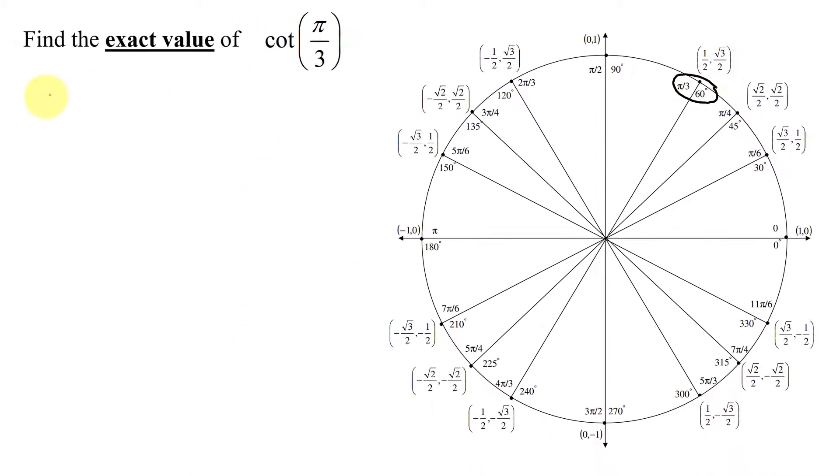So the first thing I'm going to have to do is rewrite the cotangent of pi over 3 in terms of sines and cosines. Using the ratio identities, the cotangent of pi over 3 is the cosine of pi over 3 divided by the sine of pi over 3.